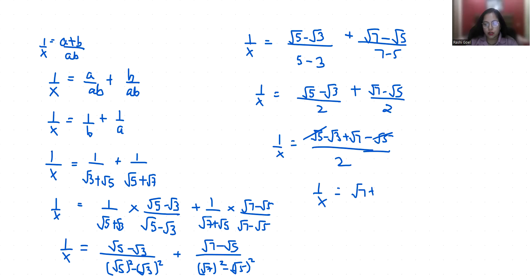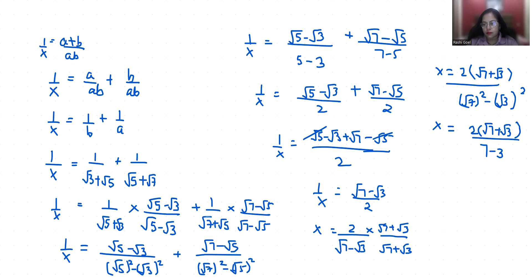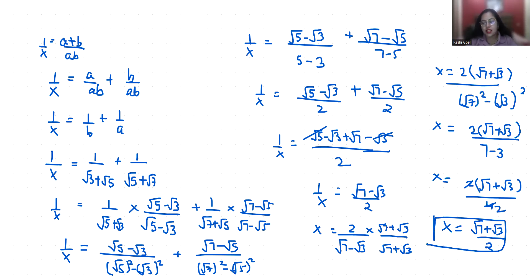So X equals 2/(√7 − √3). Rationalizing further by multiplying by (√7 + √3)/(√7 + √3) gives 2(√7 + √3)/((√7)² − (√3)²) = 2(√7 + √3)/(7 − 3) = 2(√7 + √3)/4 = (√7 + √3)/2. I hope it's clear and you find it useful. Please give a thumbs up and subscribe to my channel. Stay tuned for more upcoming videos.